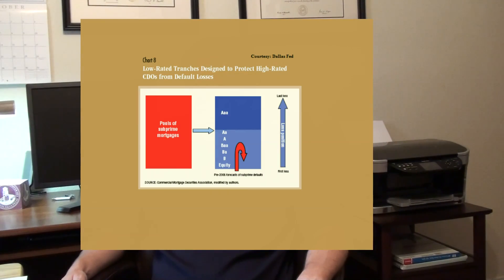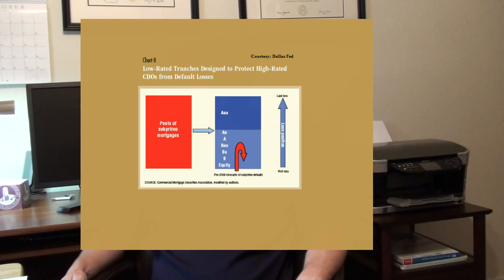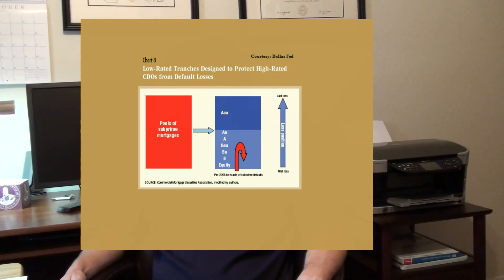Rating agencies are also at fault. CDO issuers created senior secured offerings from pools of subprime mortgages. A more judicious analysis of the underlying securities should have resulted in lower debt ratings for even the highest tranches.